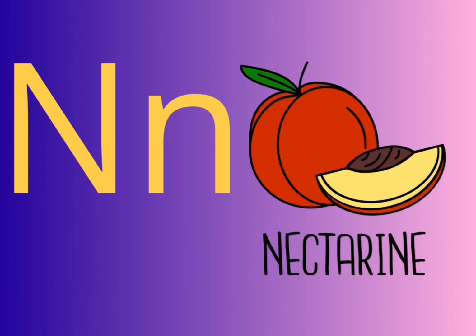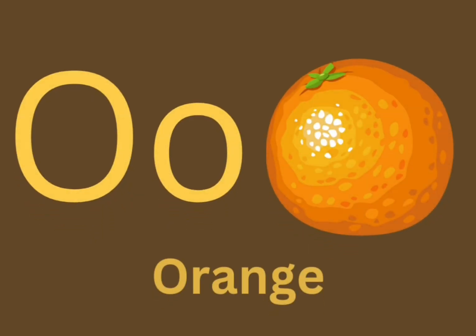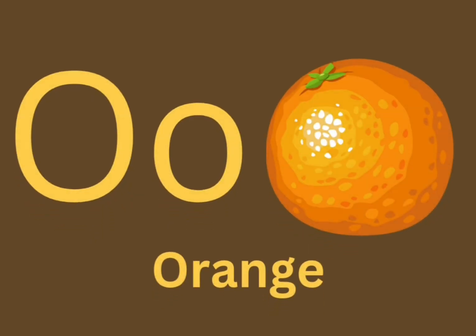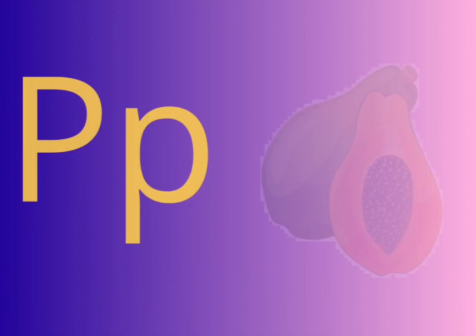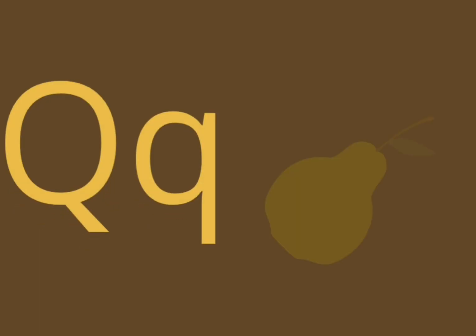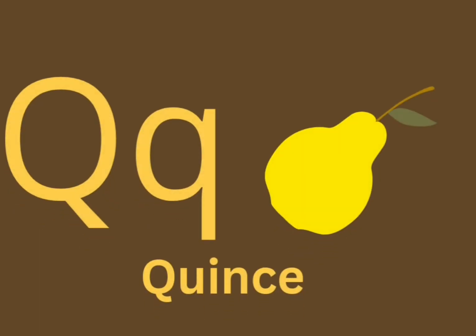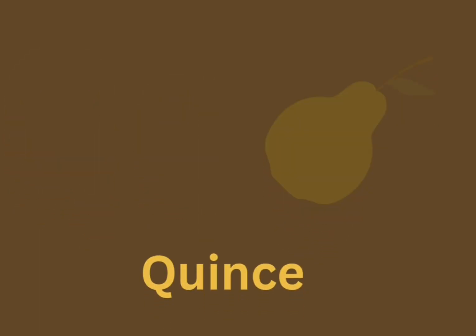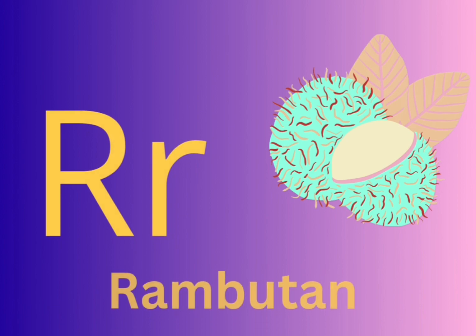N for nectar, O for orange, P for papaya, Q for quince, R for rambutan.